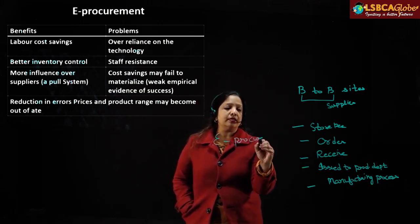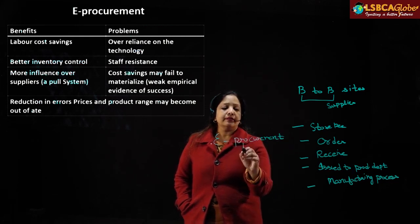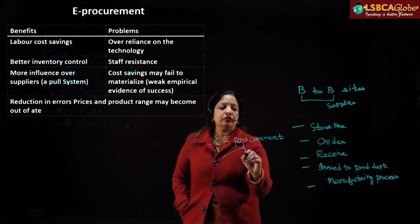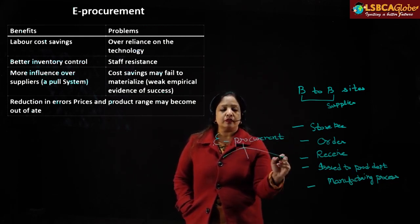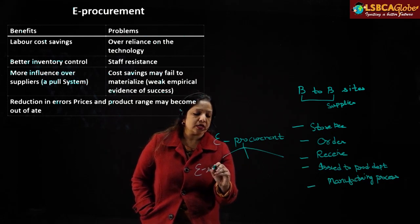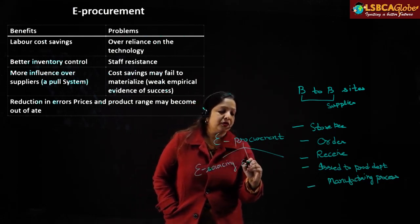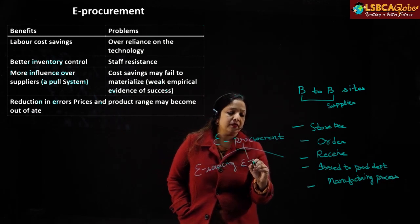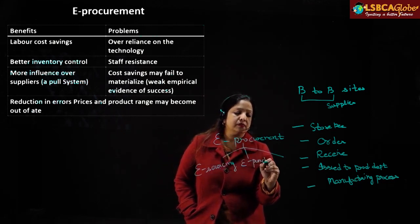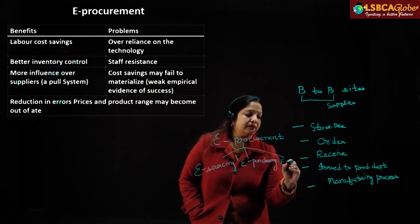E-procurement, when purchasing over the internet, has three stages: e-sourcing, e-purchasing, and e-payment.